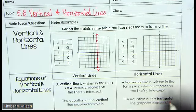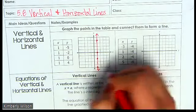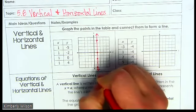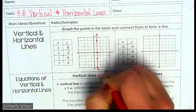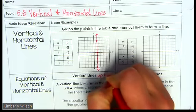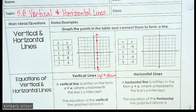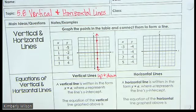And this is a vertical line, which means that it goes up and down — vertical, like a cliff. You drop off the cliff.